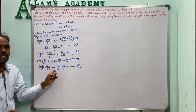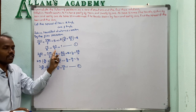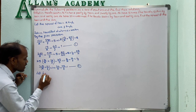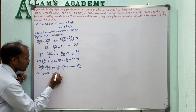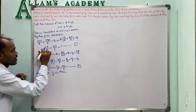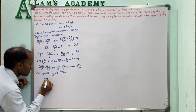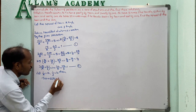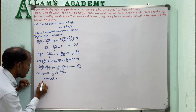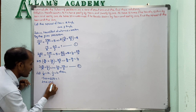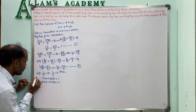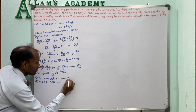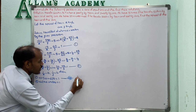Both equations have 1/X and 1/Y as denominators. Let 1/X equal A and 1/Y equal B. Then equation 1 becomes 15A plus 60B equals 1, and equation 2 becomes 24A plus 48B equals 1. These are equations 3 and 4.